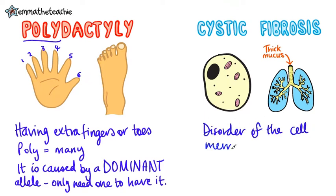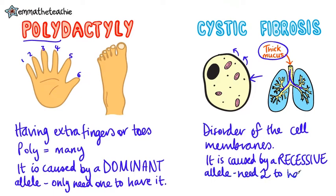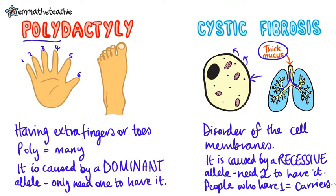Cystic fibrosis is a disorder of the cell membranes. The cell membranes struggle to move substances around, which leads to thick mucus building up in places like the lungs. It is caused by a recessive allele, which means you need two recessive alleles to have the disorder. If a person just has one of the recessive alleles, they don't have the disorder, but we call them carriers.